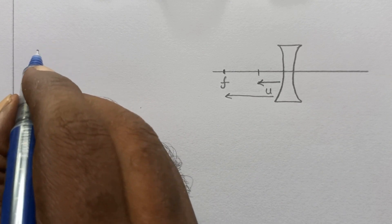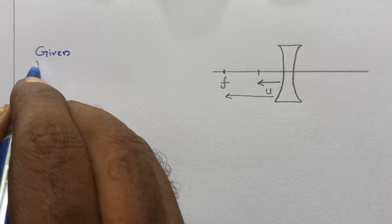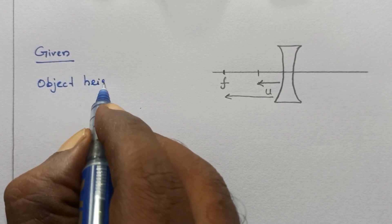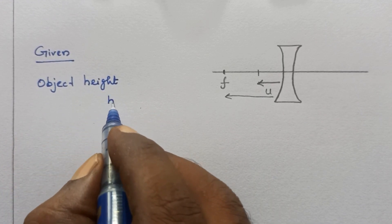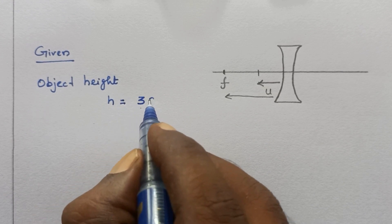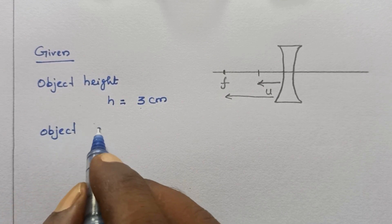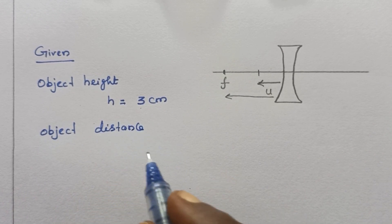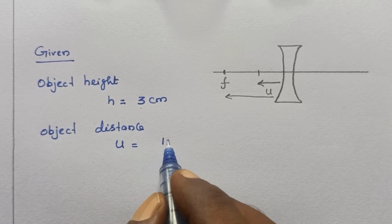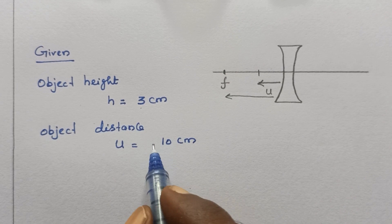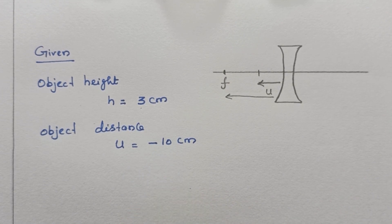Given: Object height H is 3 cm. Next, object distance — this is u, which is equal to 10 cm. Objects are placed on the left-hand side, which is negative. Whether convex or concave, the object is placed on the left-hand side, so the measurements are negative.